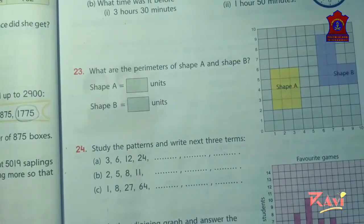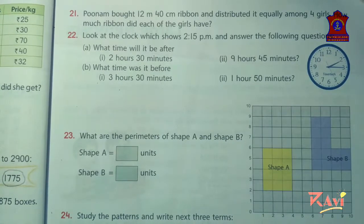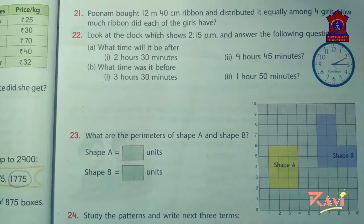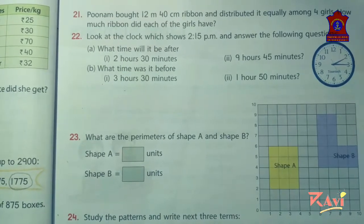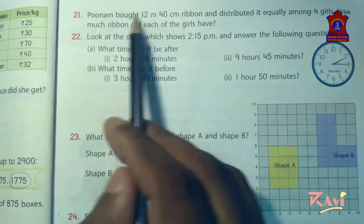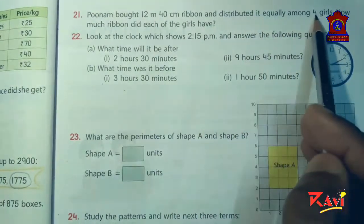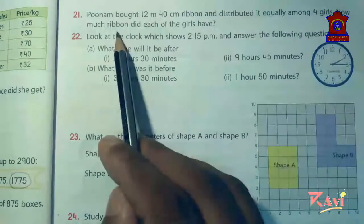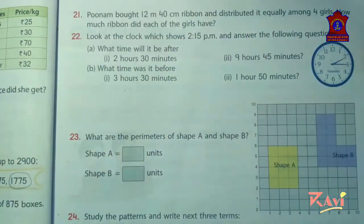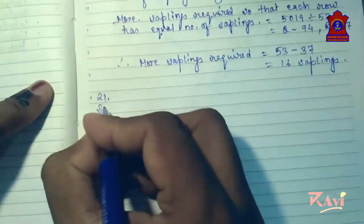Students, attending online class is very much compulsory for all of you. You have to attend all the online classes so that your doubts will be clear. Now question number 21. Poonam bought 12 meter 40 cm ribbon and distributed it equally among 4 girls. How much ribbon did each of the girls have?